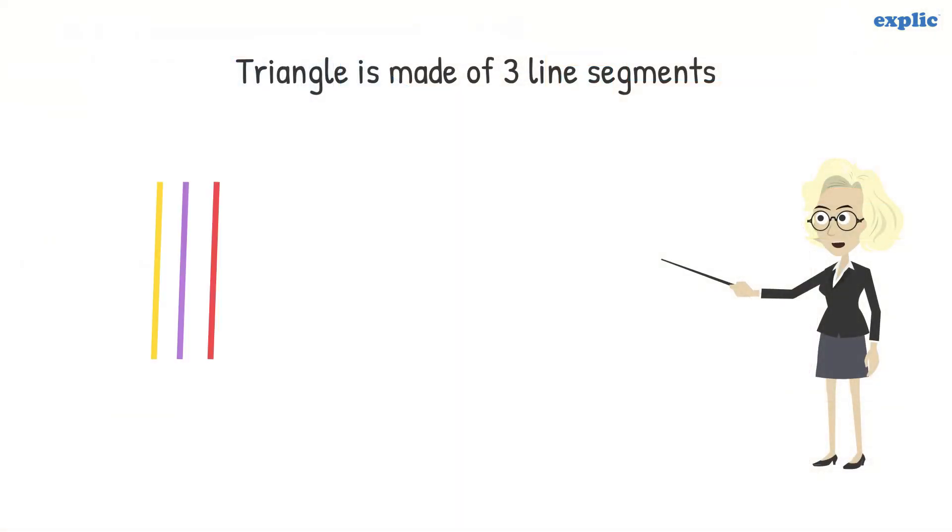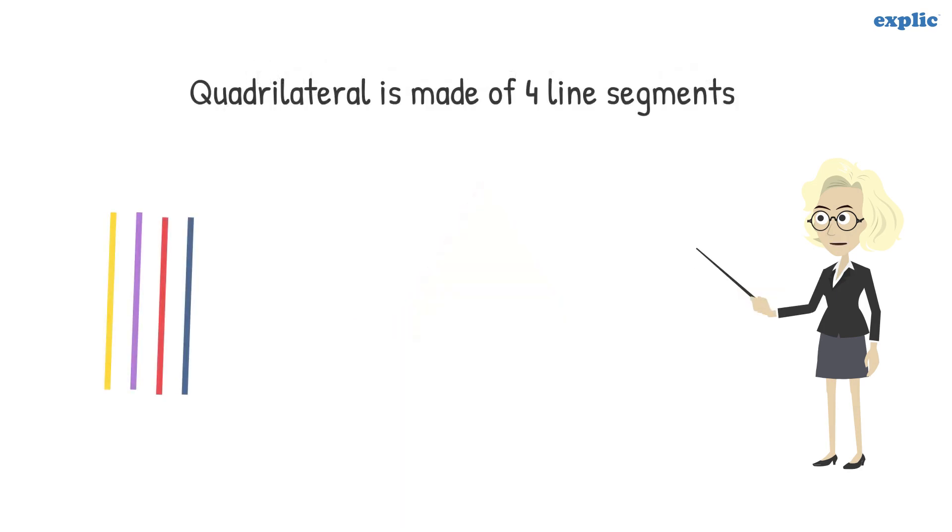A polygon made of three line segments is called a triangle. And a closed curve or shape made of four line segments is called a quadrilateral.